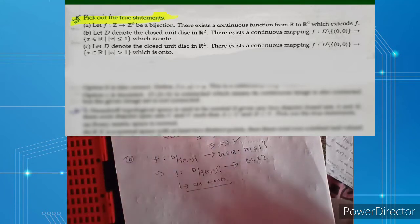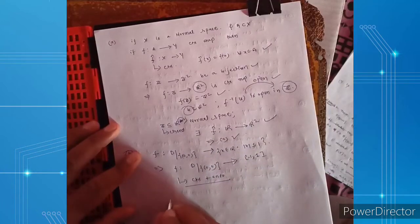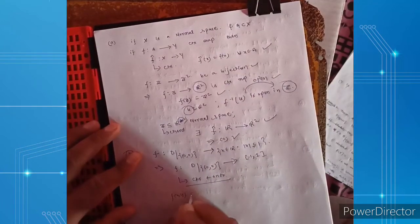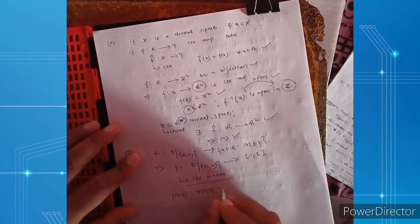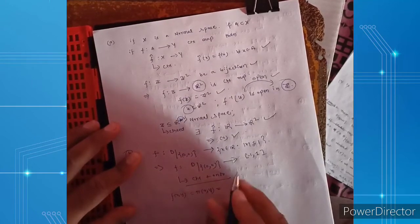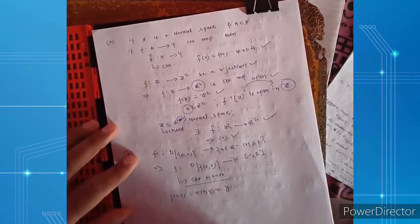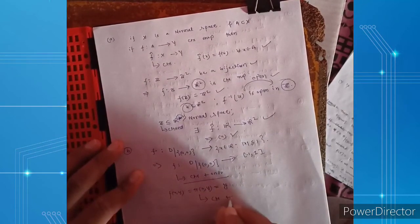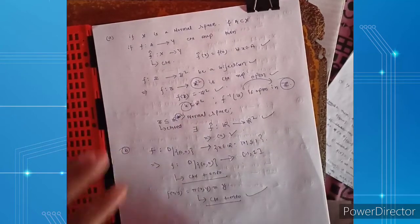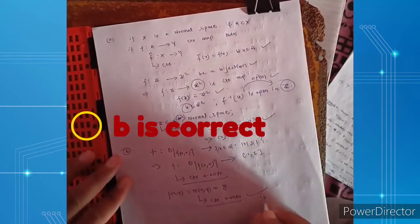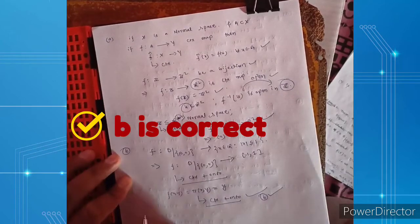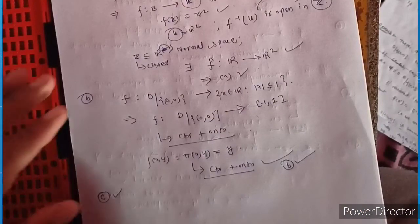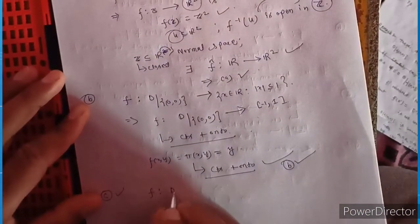Does such a map always exist? Yes — take f(x, y) = y, the projection map projecting (x, y) to y. This projection map is always continuous and onto, so statement B is true.